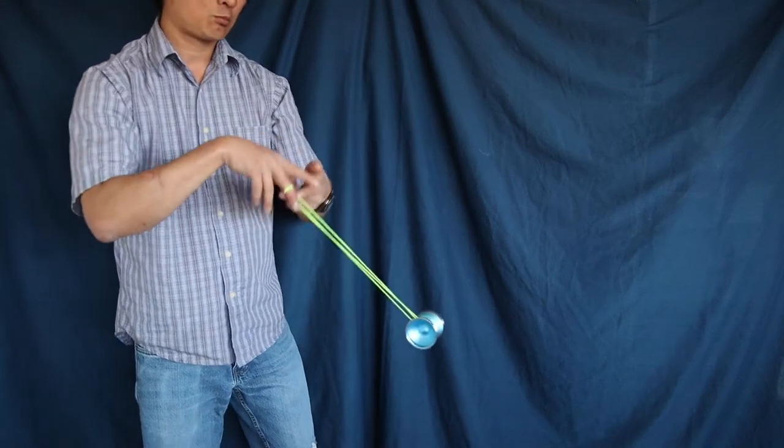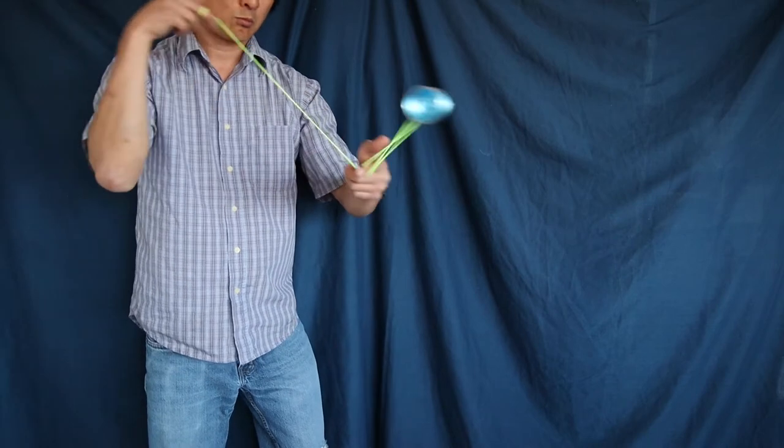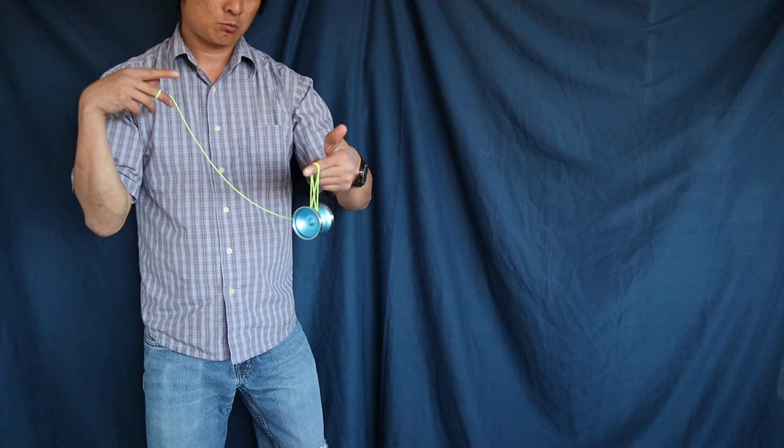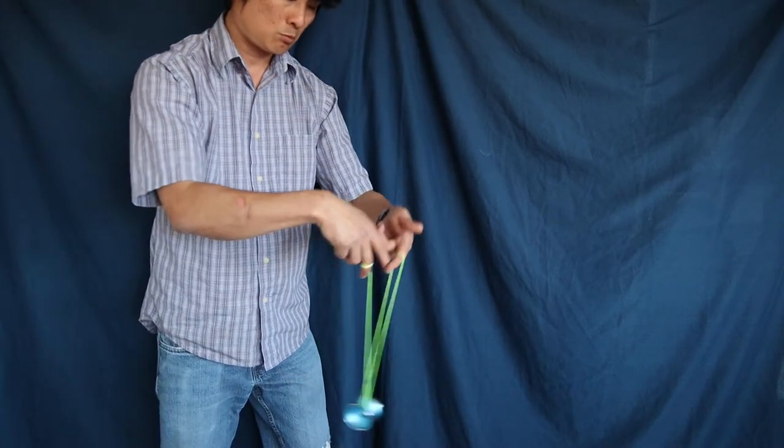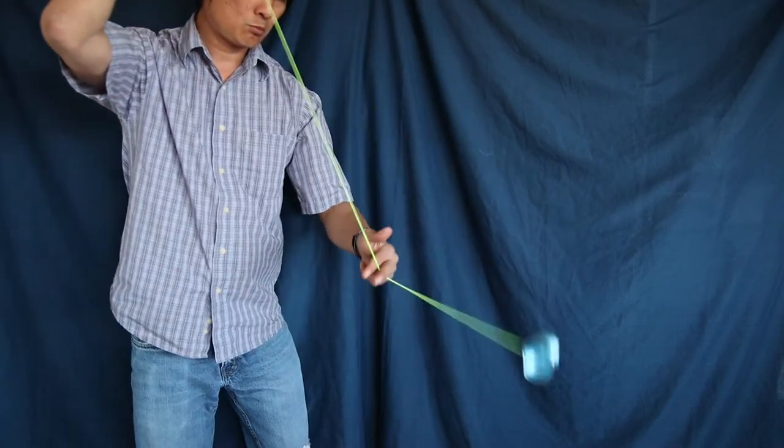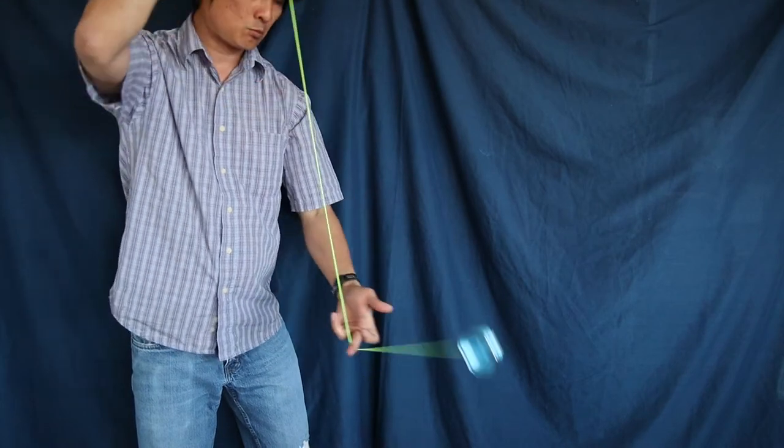And then what you're going to do is you're going to take the index finger from your non-throwing hand, and you're going to intercept that brain twister and land on that one string that's coming from your throw hand. And then you'll dismount. You can either end it with a skinned gerbil, you can do a bind, or you can continue with any other trick that can follow with it.